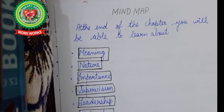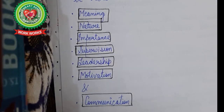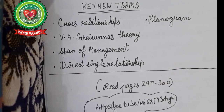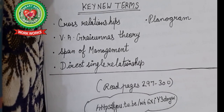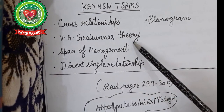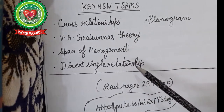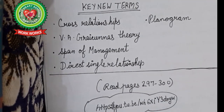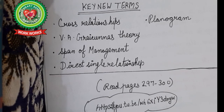Let us go through the mind map of the chapter. By the end you will learn about the meaning of directing, its nature, importance, principles, techniques, supervision, leadership, motivation, and communication. The key terms under this topic include cross relationships, V.A. Graicunas theory, span of management, direct single relationships, and planogram. Also read pages 297 to 300 before watching this video.